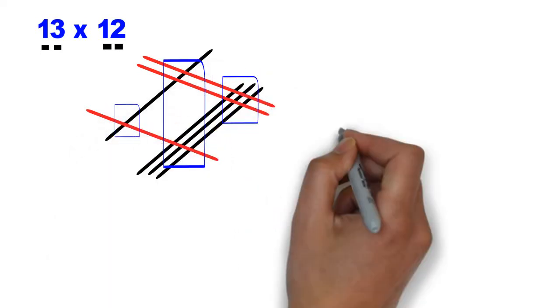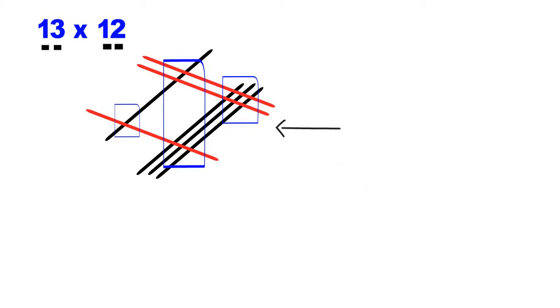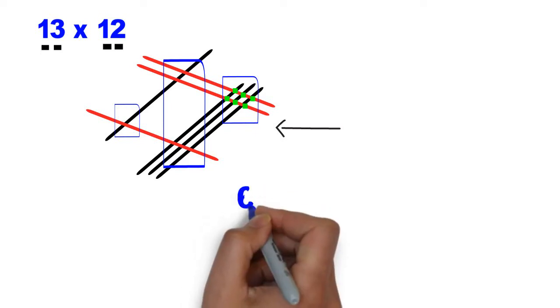And then, starting with the zone at the extreme right, we count the number of intersections. 1, 2, 3, 4, 5, and 6. So, 6 intersections. We write 6.